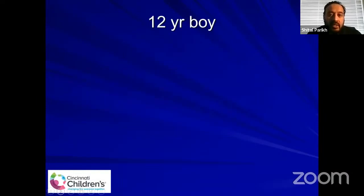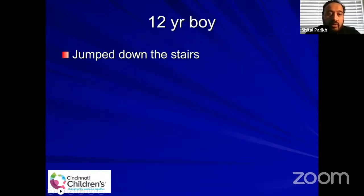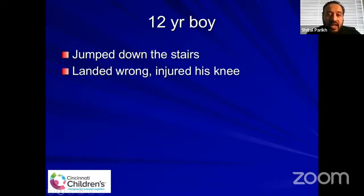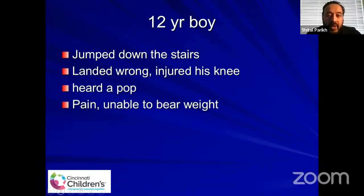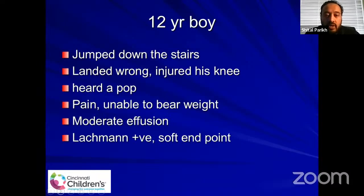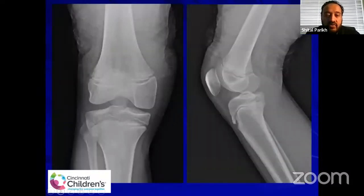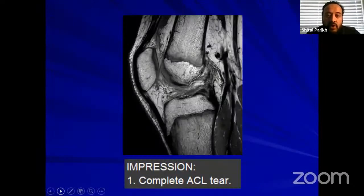I'll start with a case: a 12-year-old boy who jumped down the stairs, landed wrong, and injured his knee. He heard a pop, had pain, was unable to bear weight. He had moderate effusion and a positive Lachman test with a very soft endpoint. These are his x-rays, and as one can see, he has open growth plates on both the femur and the tibia. His MRI showed a complete ACL tear and no meniscus injury.